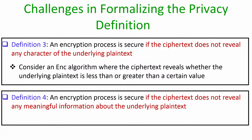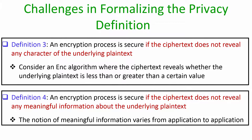Definition 4: an encryption process is secure if the ciphertext does not reveal any meaningful information about the underlying plaintext — meaning it should hide not only the plaintext itself but also whether the message is less than or greater than certain values, and so on. While intuitive, the problem is that what constitutes 'meaningful information' varies from application to application. You cannot exhaustively list what constitutes meaningful information for every application, so this cannot serve as a rigorous definition of privacy.